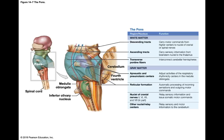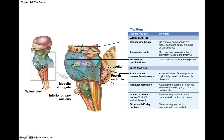The respiration nuclei of the pons are the apneustic and pneumotaxic centers, which adjust the respiratory rhythmicity center in the medulla oblongata. The transverse pontine fibers connect the two cerebellar hemispheres together, running in a transverse direction. The reticular formation also runs through the pons and continues up into the midbrain.